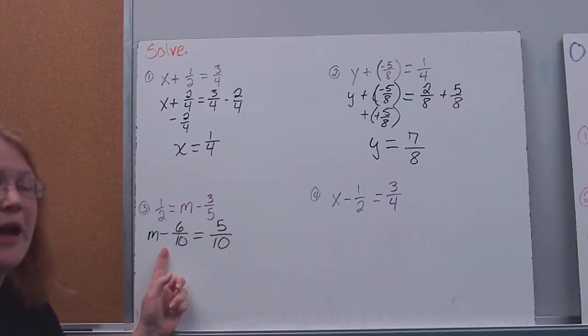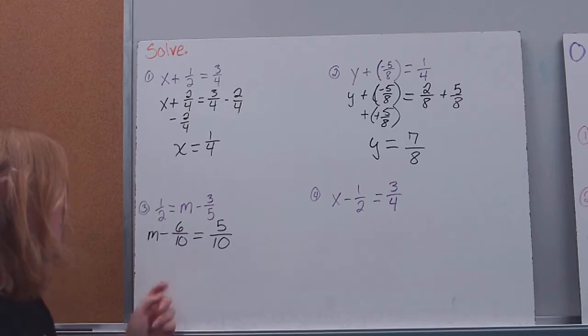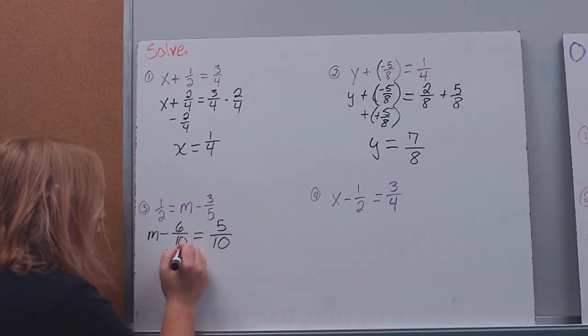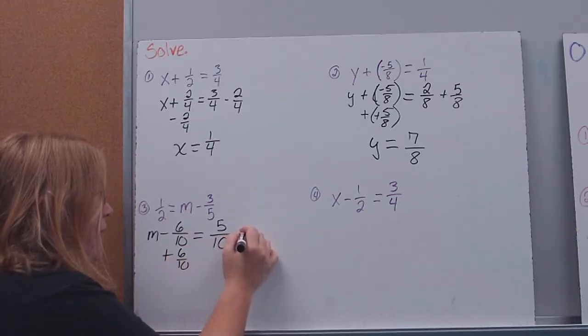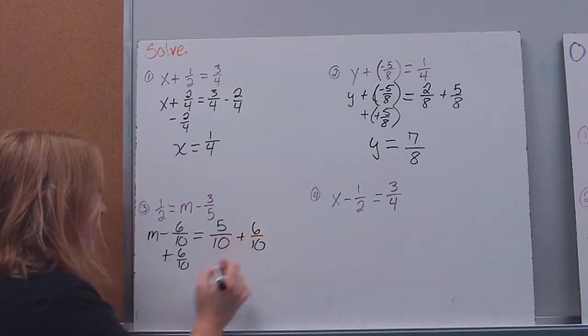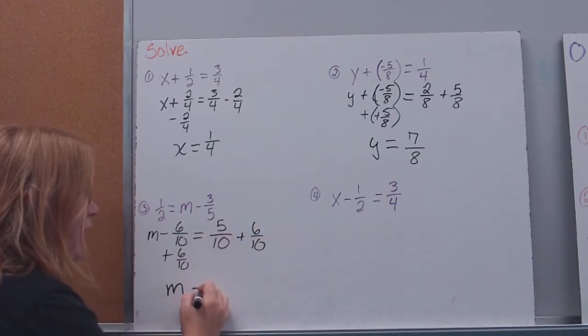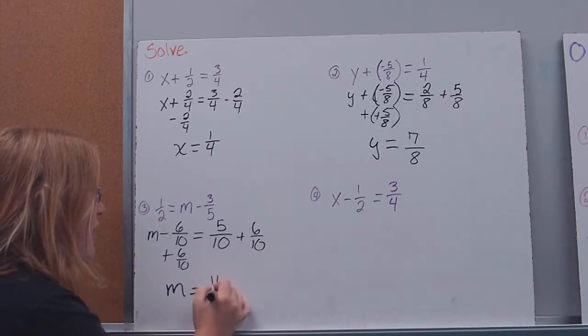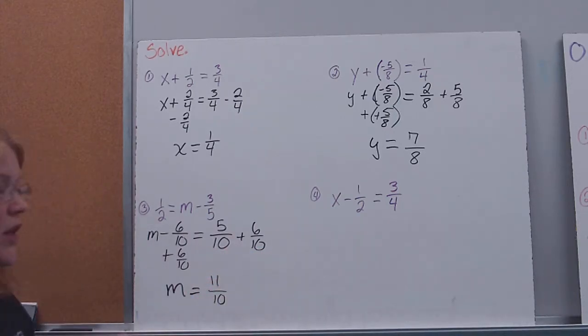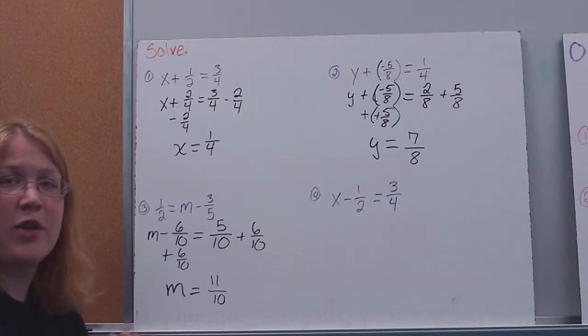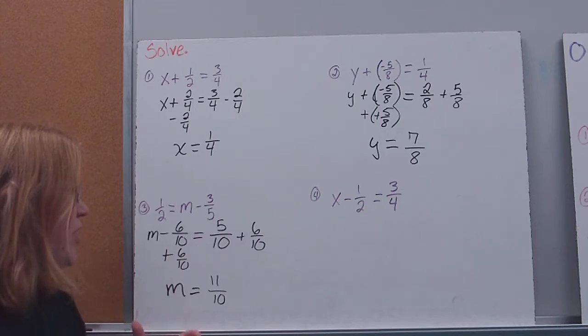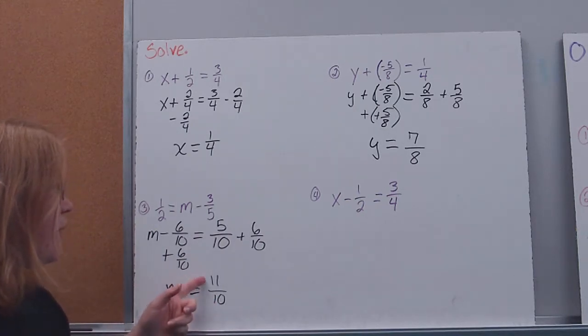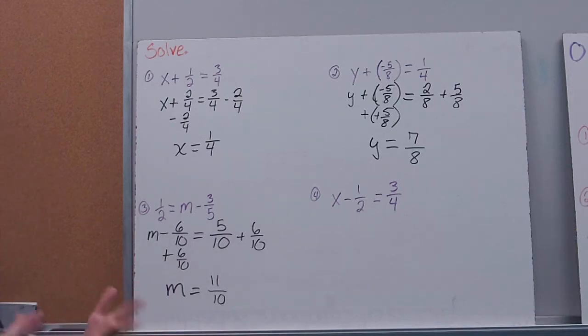Now you'll notice I have a subtraction equation here, so I'm going to undo my subtraction by adding. I'm going to add six-tenths to both sides. Over here, I'm left with m, so I've isolated my variable. When I add these together, I get eleven-tenths. You can rewrite it if you want, or you can leave it in its improper form, because like I said, we're going to be talking about proportions and ratios where we don't want to try to convert that. I don't want to confuse you. So eleven-tenths or one and one-tenth, however you want to say it.